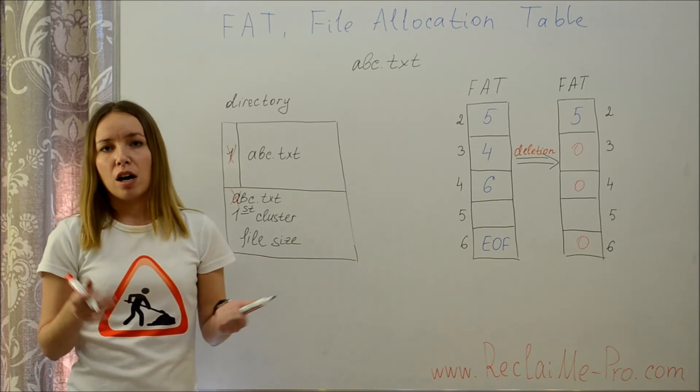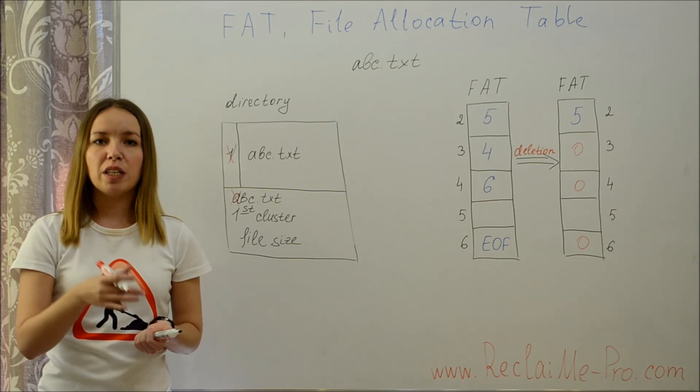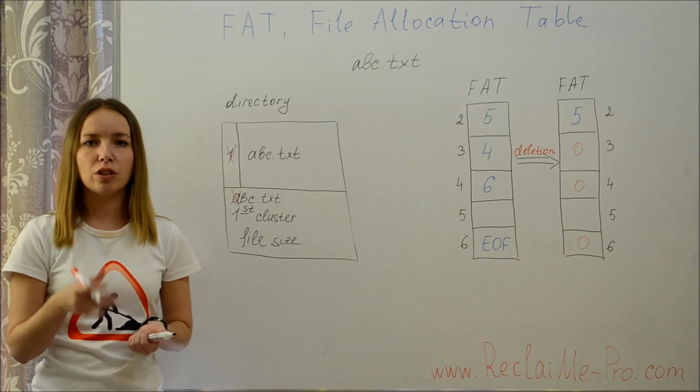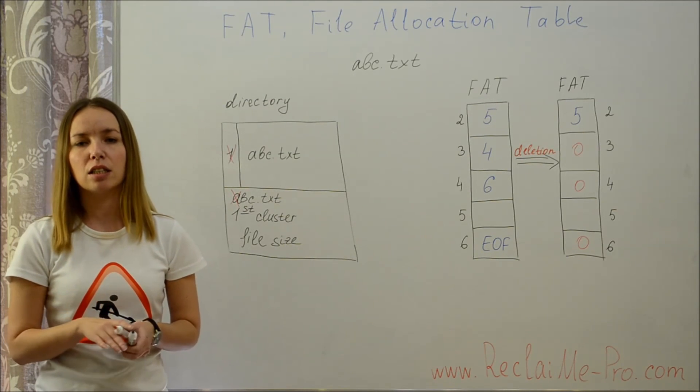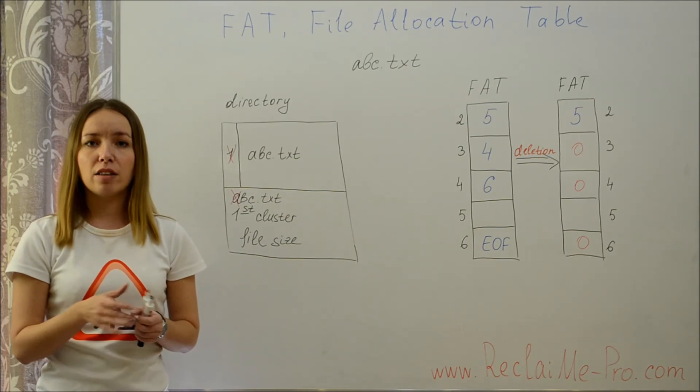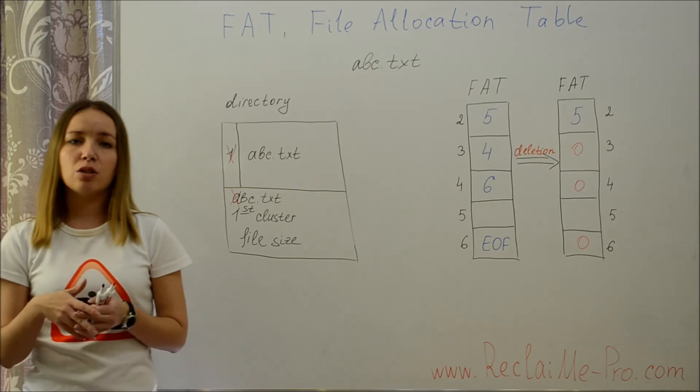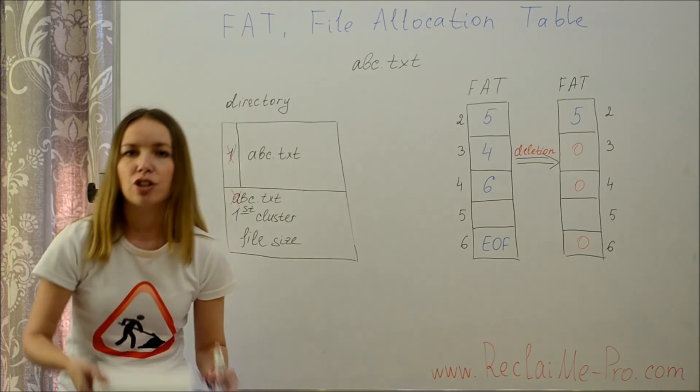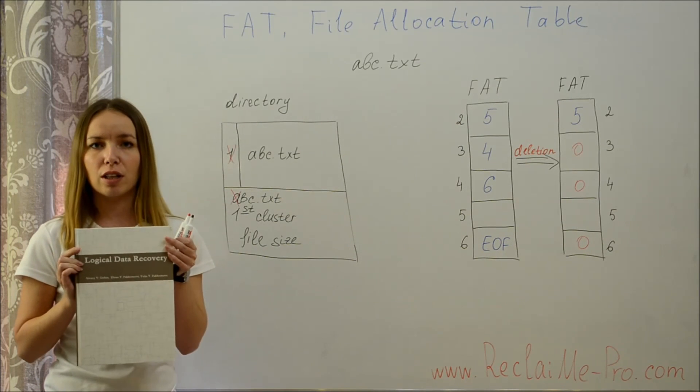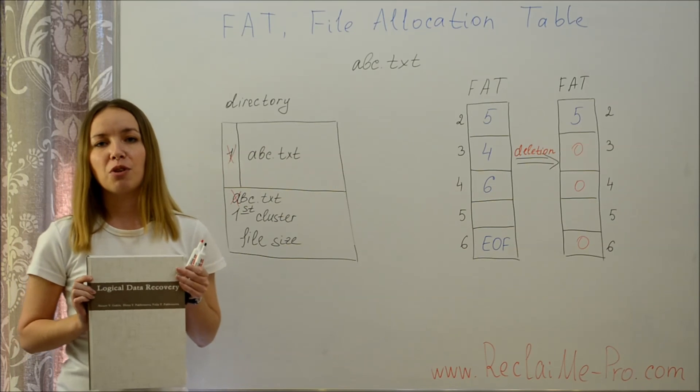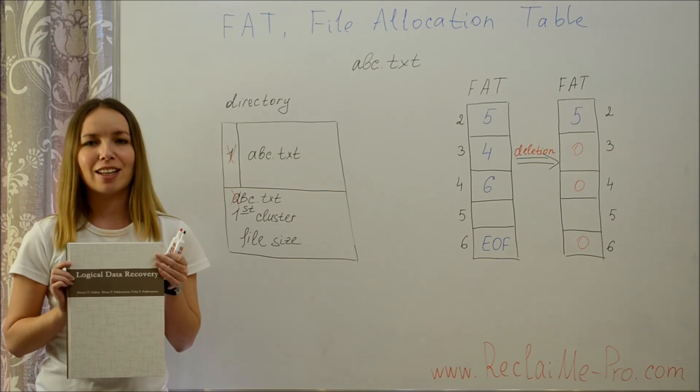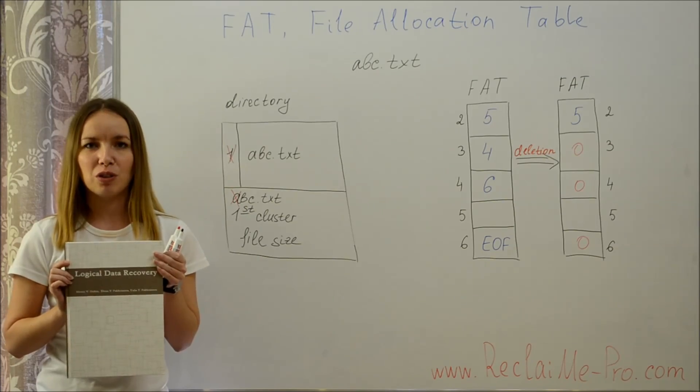So, you can find beginnings of all FAT directories by searching disk for dot and 10 spaces in the beginning of a sector. That's all about FAT file system. You can find more information in our book Logical Data Recovery. If you like our videos, subscribe to the Reclaim Me channel. Reclaim Me team was with you. See you soon!